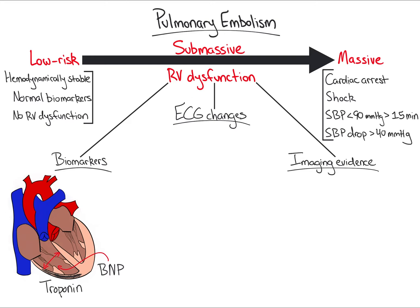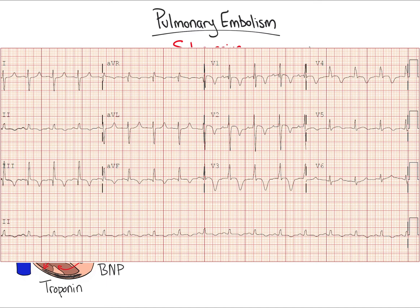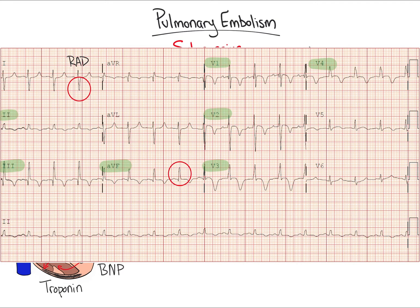Next, we assess the ECG for changes associated with RV dysfunction. Shown is the patient's ECG. Take 10 seconds to identify as many signs as possible of RV dysfunction. The RV is an anterior and inferior structure. Therefore, it is best assessed with the precordial leads V1 through V4 and inferior leads 2, 3, and AVF. We will be looking in these locations for evidence of RV dysfunction. First, there is right-axis deviation as demonstrated by a negative QRS in lead 1 and positive QRS in 2, 3, and AVF.